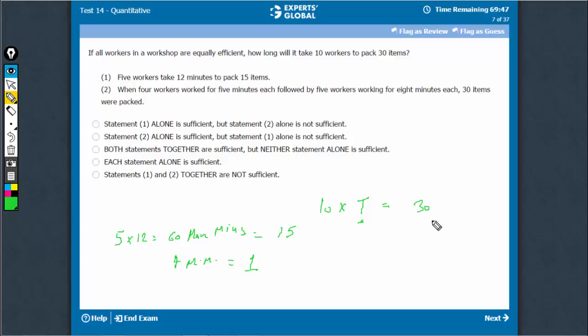To pack 30 units of work, we need 120 man minutes. 10 we know, so t has to be 12. 10 into 12 would be 120 man minutes. We get the value of t, 12. Statement 1 is sufficient.